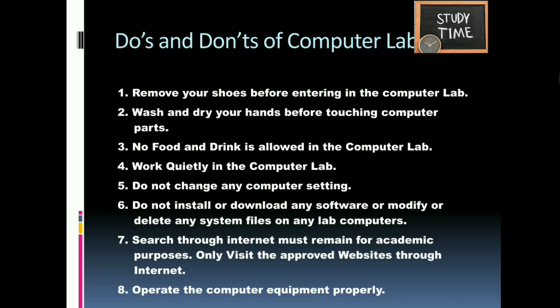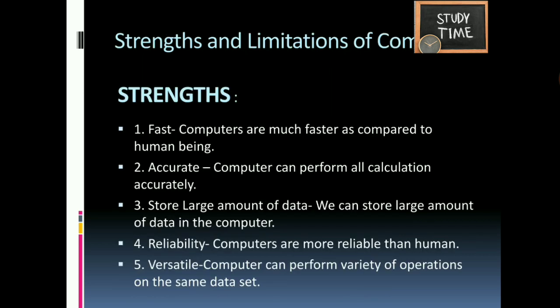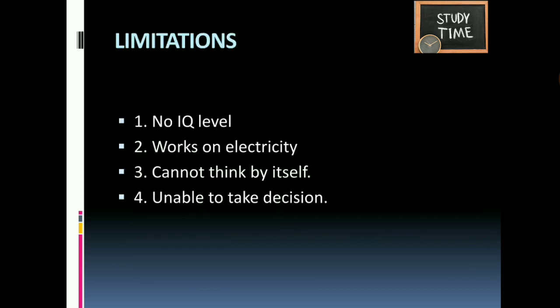Strengths of a computer: it can work fast compared to human beings. It is accurate — a computer can perform all calculations accurately. It can store a large amount of data. It is more reliable than a human. It is versatile, meaning it can perform a variety of operations on the same data set.